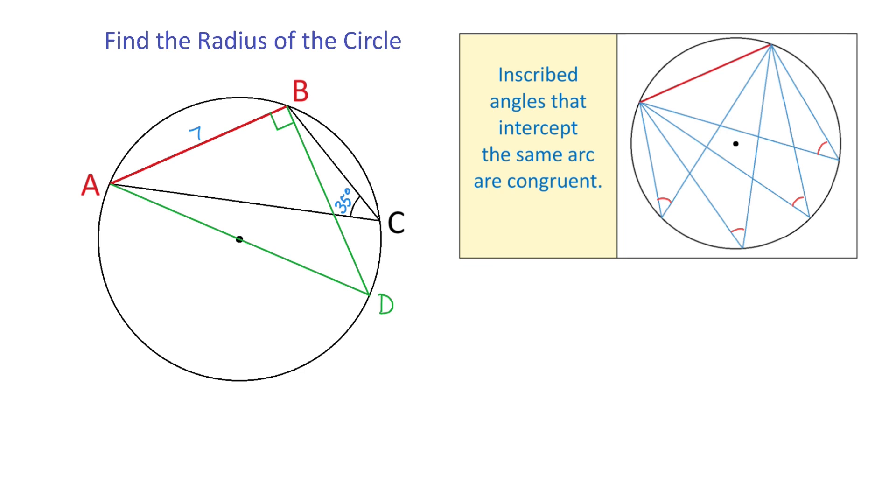So then, back to our problem. If this angle measures 35 degrees, then this one is also 35 degrees. And now in the right triangle ABD, we know an acute angle that measures 35 degrees and the opposite side that is 7 units.